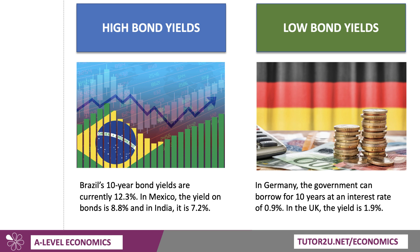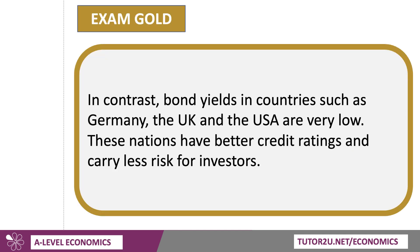Those were three countries with yields that are pretty high. In contrast, in Germany the government can borrow for 10 years at an interest rate of less than 1%. Go back a year or two, that interest rate was actually negative, but it's now 0.9% — still very low. In the UK, the yield is 1.9%, and in the States, the yield has jumped up to 2.9%. Although yields are going up, they remain very low. Bond yields in nations such as Germany, the UK, and the USA are very low.